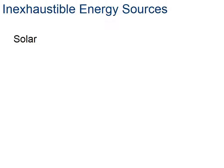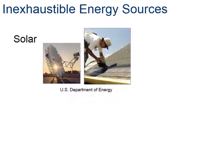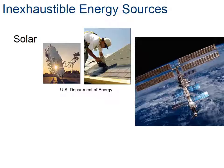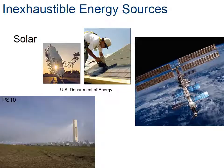We've been talking about the sun throughout and how it provides a lot of our energy. The last inexhaustible energy source is solar power, which can come in a couple of different forms. Here you see a spacecraft that uses photovoltaic cells, which turn photons directly into electricity - that's how many earthbound satellites generate their power. The PS-10 shown in the lower left is a tower that concentrates the sun's rays to produce steam. Rather than turning photons into electricity, it concentrates the sun's heat to produce steam, and that steam powers a generator to create electricity.